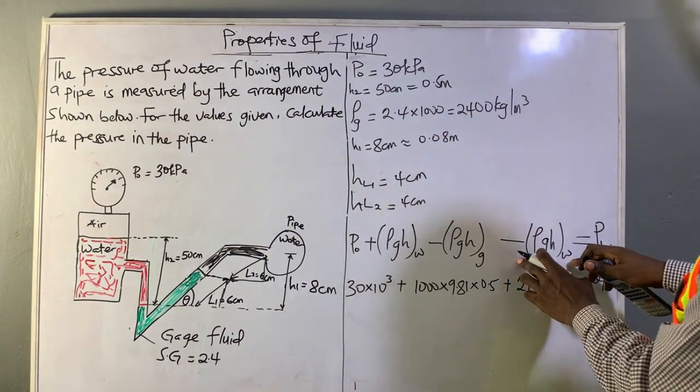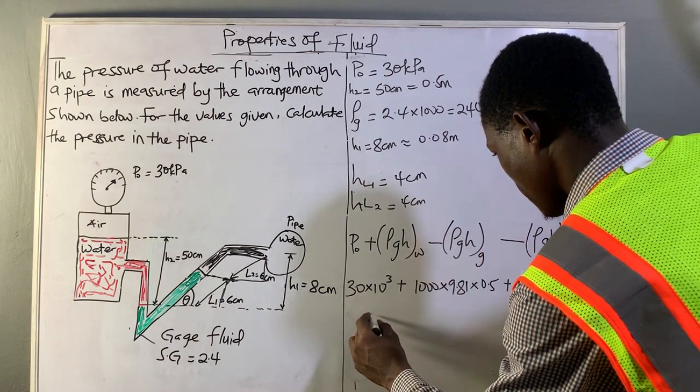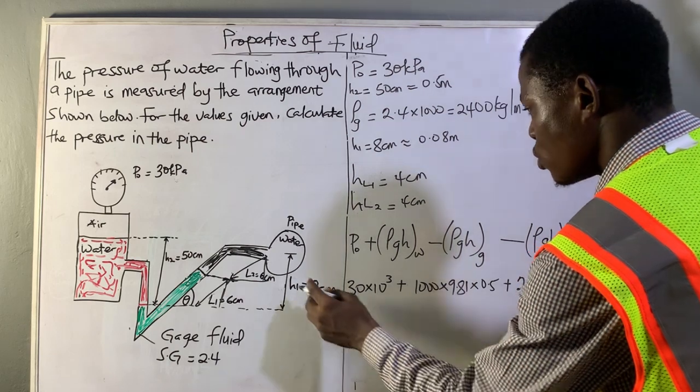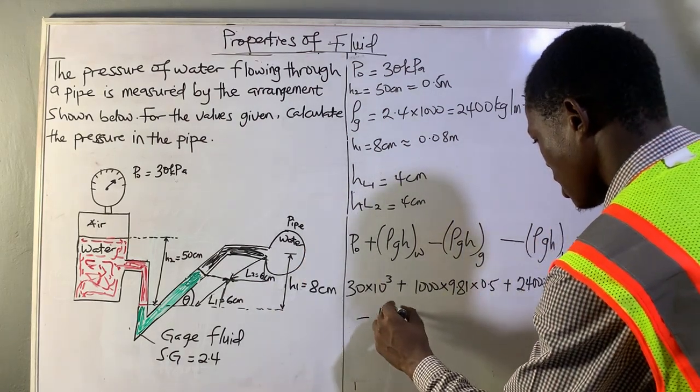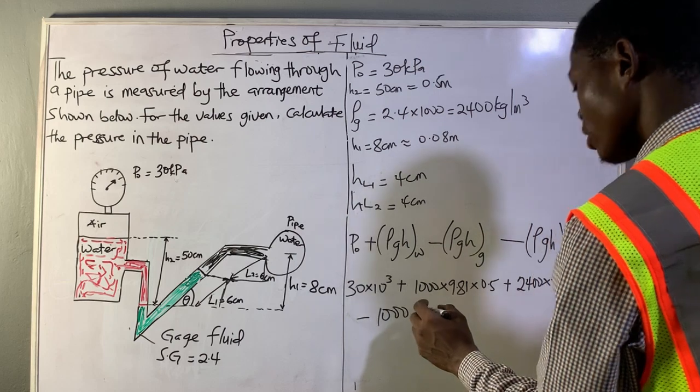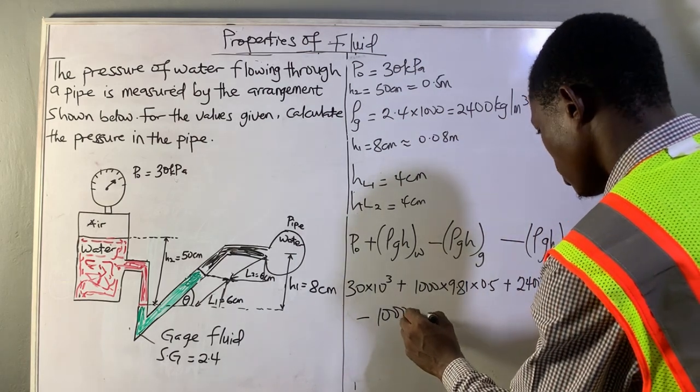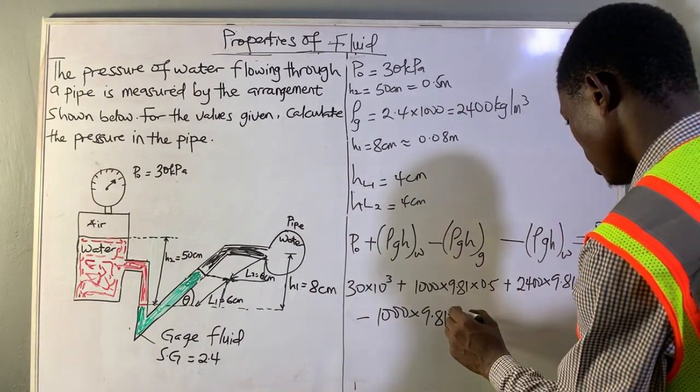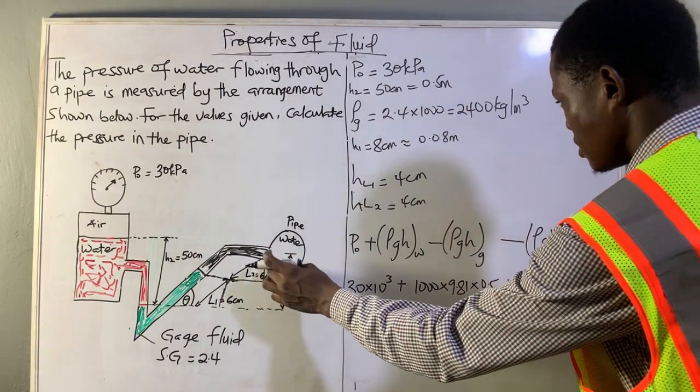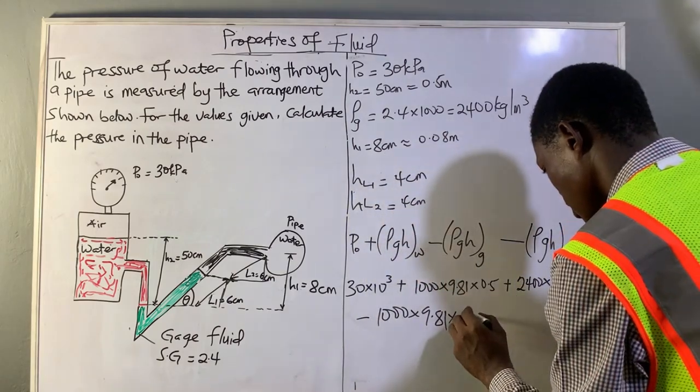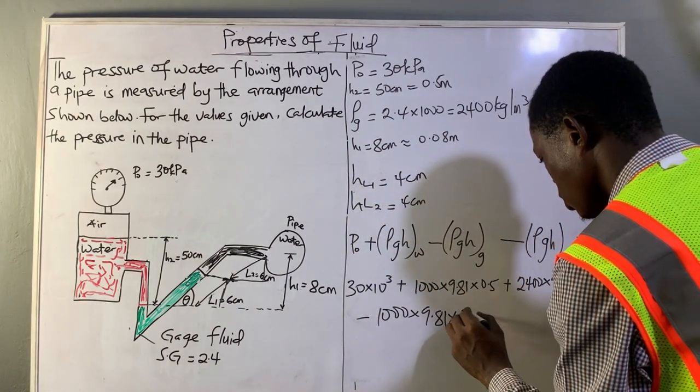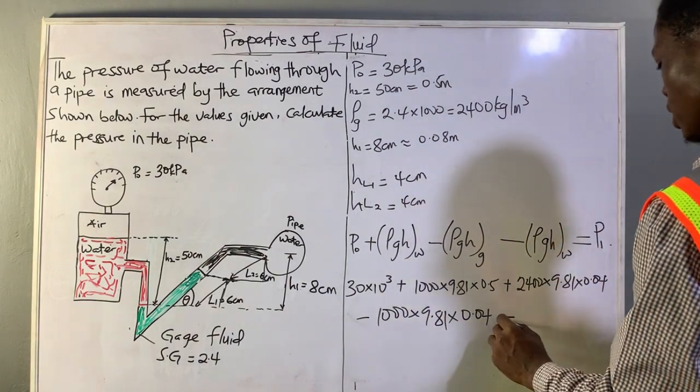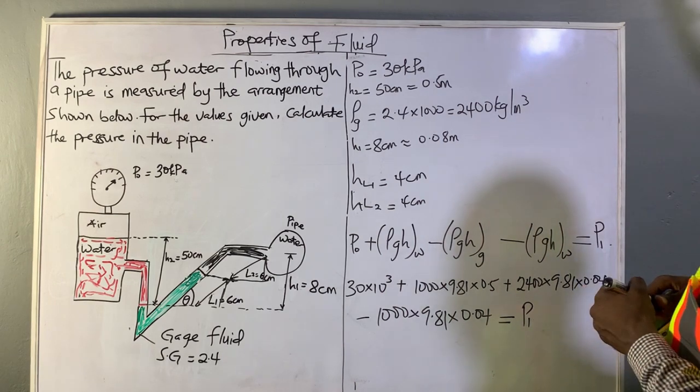And we have our last parameter, which is minus the density of water, 1000 kg per meter cubed, times 9.81 again, the acceleration due to gravity, times the same distance, 0.04 meters, and all this will be equal to P1, the pressure in the pipe.